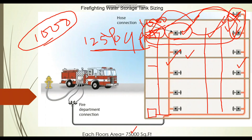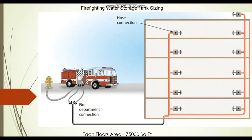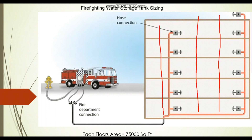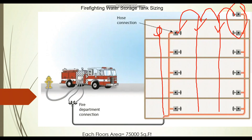Suppose you have even more standpipes — say standpipes 1, 2, 3, 4, and 5. The last standpipe contributes 500 GPM, the next 250 GPM, then 250 GPM, then 250 GPM — totaling 500, 750, 1000, 1250 GPM. The fifth standpipe does not need to be considered because the maximum value is already reached at 1250 GPM for a project without a sprinkler system. This is the way we find the fire pump flow capacity.